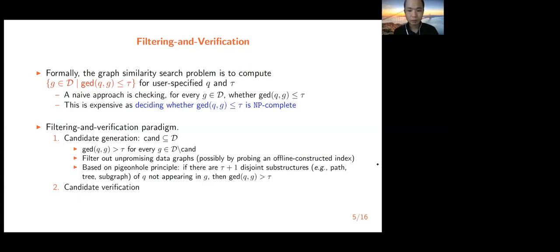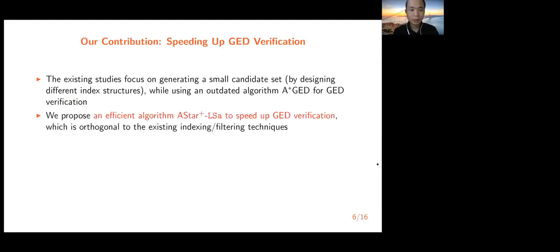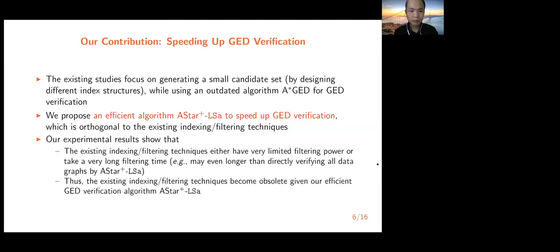Different substructures are used in filtering — path-based, tree-based, and subgraph-based — based on the pigeonhole principle: if there are tau+1 disjoint substructures of Q not appearing in G, then GED(Q,G) > tau. Existing studies focus on generating small candidate sets via different index structures, but all use an outdated algorithm, A*GED, for verification. We propose an efficient algorithm called A*+LSA to speed up GED verification. Our algorithm is orthogonal to existing indexing and filtering techniques. Our experimental results show that existing indexing and filtering techniques either have very limited filtering power or take very long filtering time, making them obsolete given our efficient verification algorithm.